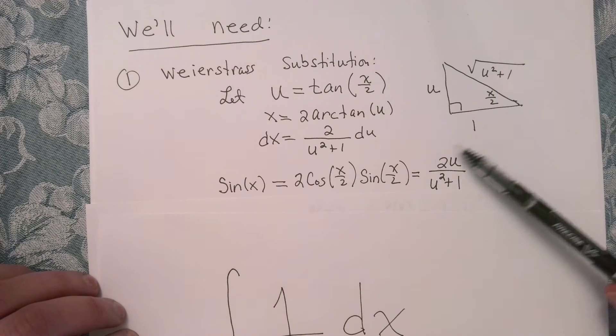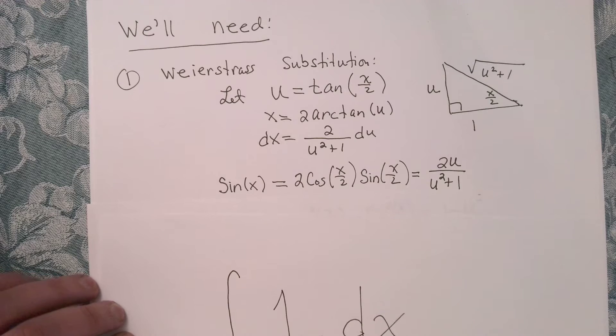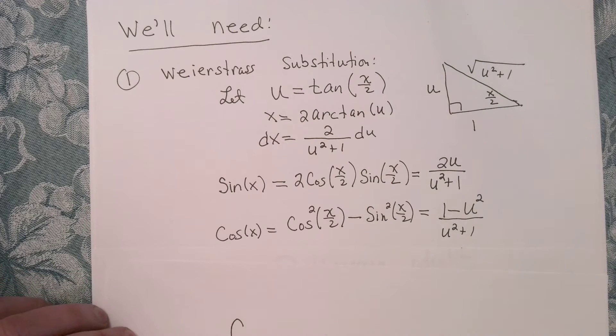So for sine of x, we'll use exactly this quantity here. Okay, same idea with cosine. So for cosine of x, notice the double-angle formula, but sort of put into this context. And notice that after we compute, we get that the cosine of x is exactly this quantity.